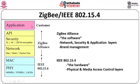Looking at the ZigBee protocol stack: it gives specifications from the physical layer right up to the application. At the physical layer, certain standards are defined, then the MAC — Media Access Control — layer is defined. This is part of the 802.15.4 standard. The ZigBee alliance also provides directions for the middle layer: the APIs to be used, how security is handled, and how the network is formed — whether star topology, mesh topology, or cluster tree topology. The application layer is left to the customer.